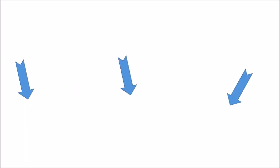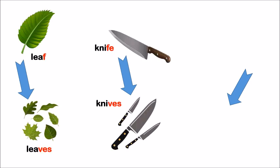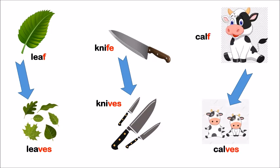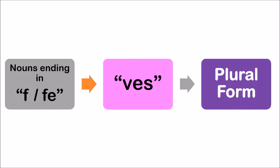Children, let's learn another rule. Study these examples — all these singular nouns end with F or FE. Leaf → leaves, knife → knives, calf → calves. Did you notice how they form plurals? We remove F or FE and add VES to form the plural form.